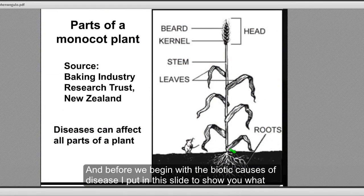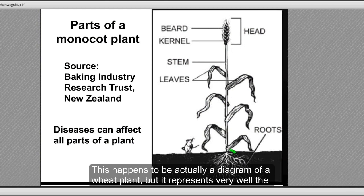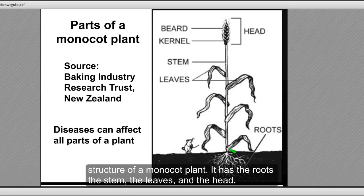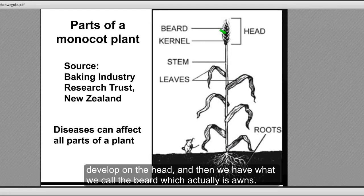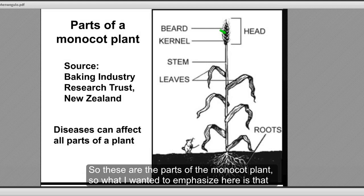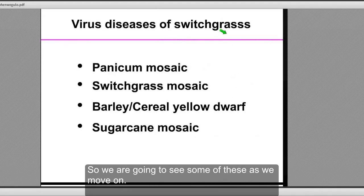Before we begin with the biotic causes of disease, I put in this slide to show you the structure of a monocot plant, which switchgrass is. This happens to be a diagram of wheat, but it represents very well the structure of a monocot plant. It has the roots, stem, leaves, and then the head — sometimes known as the panicle — where kernels develop. Diseases can affect any part of the plant, from the roots to the stem to the leaves to the head.